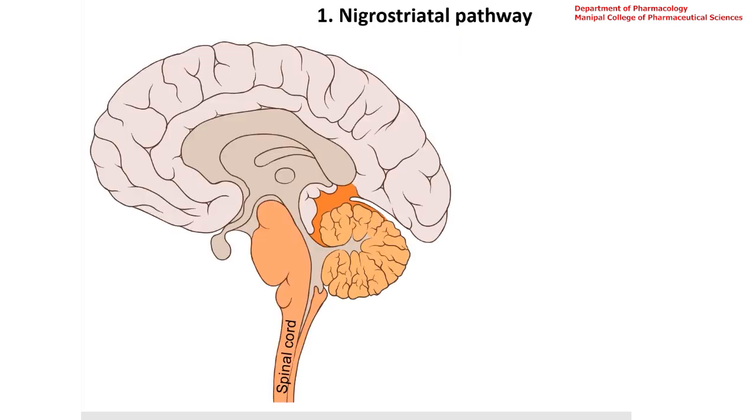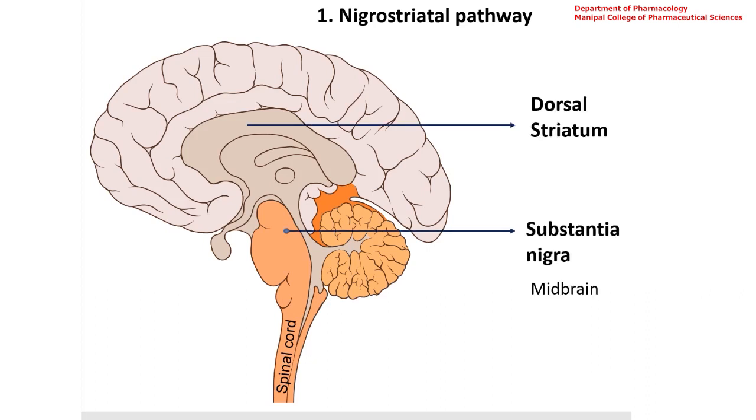First, nigrostriatal pathway. This pathway extends from substantia nigra present in the midbrain to dorsal striatum located in the basal ganglia. The cell bodies of these neurons are located in substantia nigra and the axons project into the dorsal striatum. This pathway accounts for about 75 percent of the dopamine content in the brain. It has important functions in motor coordination.